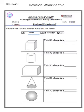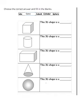And next, this worksheet for tomorrow, that is 4-5-2020, revision worksheet number 7. Here, choose the correct answer and fill in the blanks. We know, first one, it is cube. Yes, very good. Cube. Then write C-U-B-E, cube.